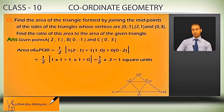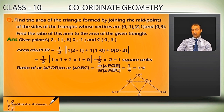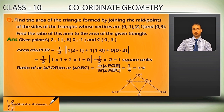This becomes ½ × 2 = 1. So area of triangle PQR is 1 square unit. Now the ratio of area of PQR to area of ABC is: area(PQR) / area(ABC) = 1/4, that is 1:4. So this is our ratio. Now see the next question.